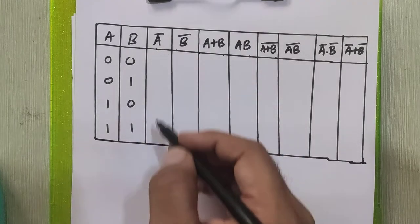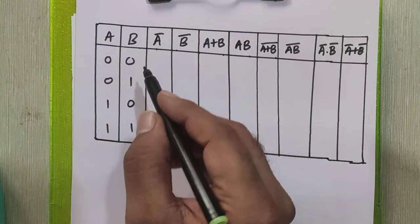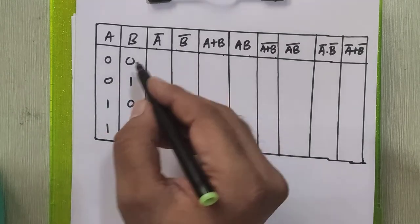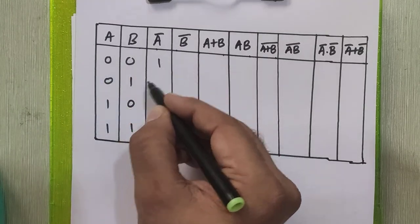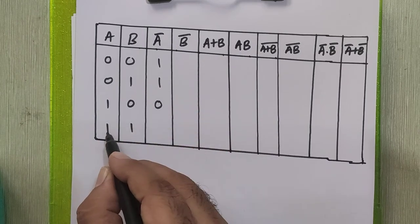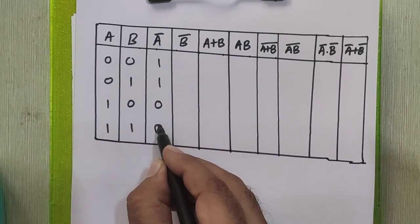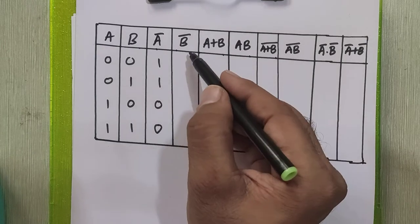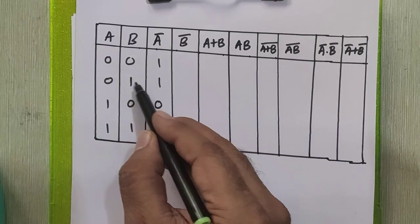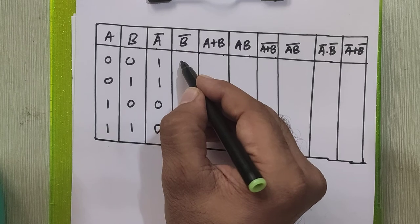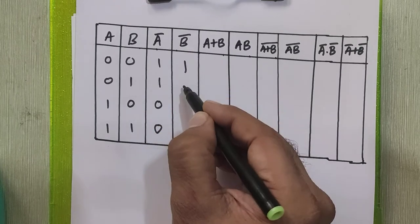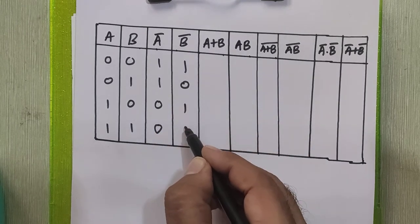To find A complement, replace 0 by 1 and 1 by 0 in the A column. So the values become 1, 1, 0, 0. To find B complement, we replace 0 by 1 and 1 by 0 in the B column, giving us 1, 0, 1, 0.